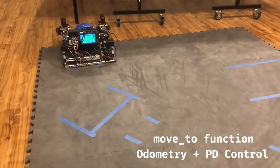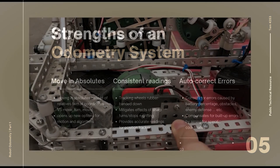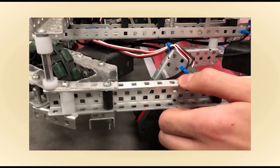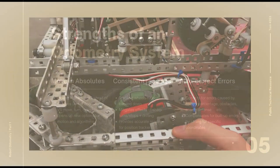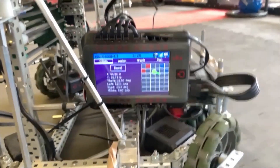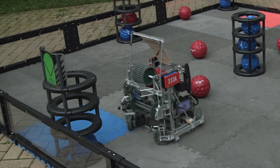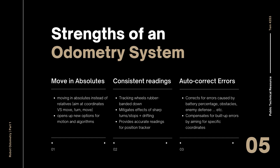Another advantage is that since the tracking wheels are always rubber banded down to the surface of the field, even when the robot jumps up due to sharp stops or drifting, the encoders will still be recording values because the tracking wheels will always be in contact with the field. Using these readings, we can actually correct arbitrary errors in our movements, whether caused by battery percentage, bumping into an unforeseen obstacle, or an enemy defense. Since odometry lets the robot know wherever it is on the field, and we are aiming at absolute coordinates instead of moving in relative terms, the robot will compensate for any error so that even if it was off at a specific point, the next position it goes to will be accurate.